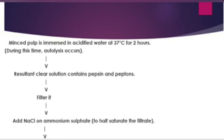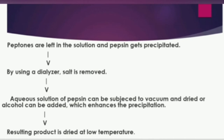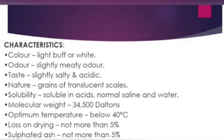After filtering, sodium chloride solution and ammonium sulfate powder are added to the mixture. Peptones remain in the solution while pepsin gets precipitated at the bottom. Then dialysis is used to remove the sodium chloride and ammonium sulfate salts. The aqueous solution of pepsin is then subjected to vacuum and dried. Optionally, alcohol can be added to form a precipitate, then dried at low temperature to get the final pepsin product.